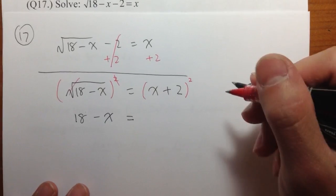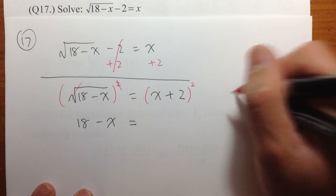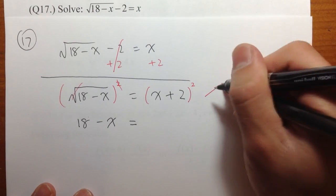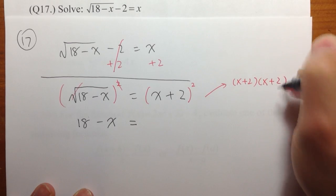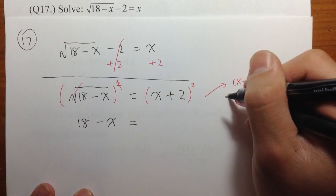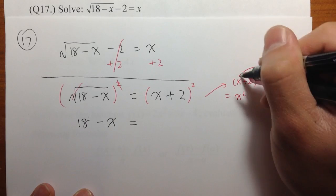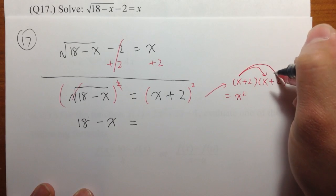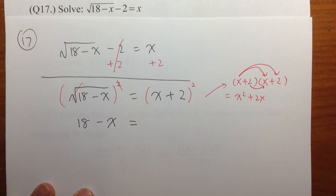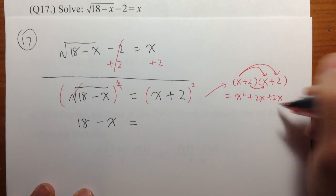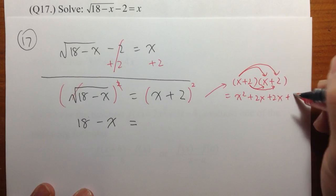I suggest you work this out on the side. This means x plus 2 times x plus 2. To work this out, you take x times x, you get x squared. Take x times 2, you get plus 2x. Take this 2 times x, you get plus 2x. Then 2 times 2, you get plus 4.